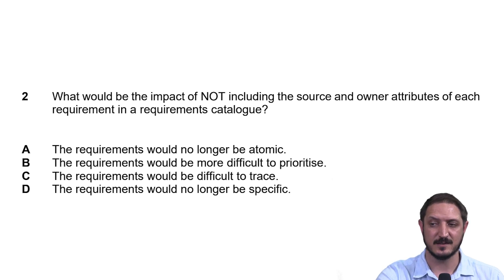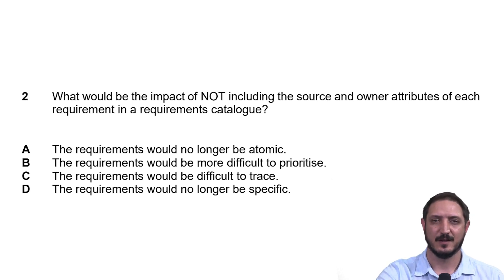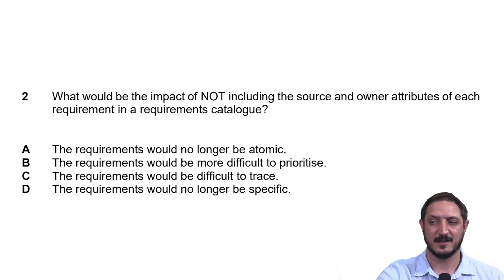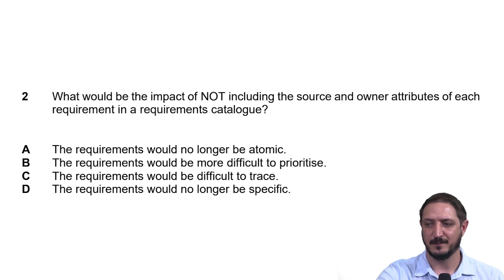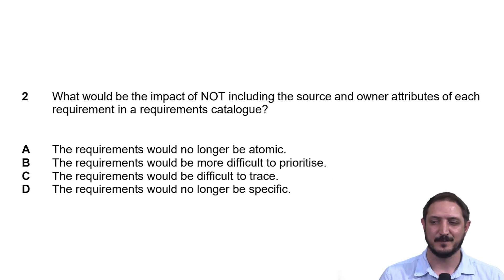Option C says the requirements would be difficult to trace. From our discussion, this is clearly the correct answer. Knowing the source and owner attributes in the requirements catalog is all about traceability — looking back to who or where a requirement came from. Option D says requirements would no longer be specific. Being specific, clear, unambiguous, and concise are properties addressed through requirements analysis, not through the source and owner fields.